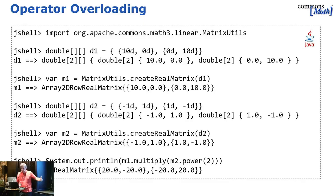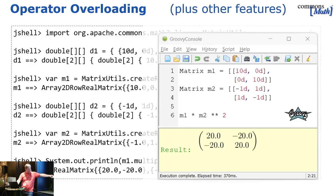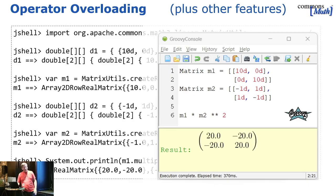For matrix calculations, if I grab Apache Commons Math and I want to define two matrices — do one to the power of two, which is multiplying by itself, and then multiply it by the other matrix — I can write it the long way, or in Groovy I can write it more concisely. It's the exact same library calls, but that's all the code I need to write. And the Groovy console is extensible, so when it produces a matrix you can display it as a LaTeX-generated graphical representation if that's what you want.